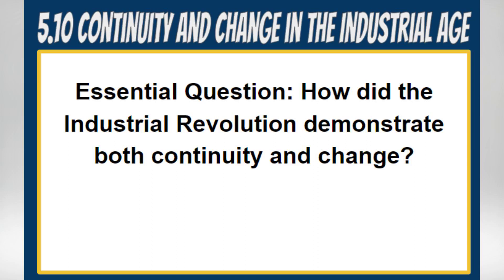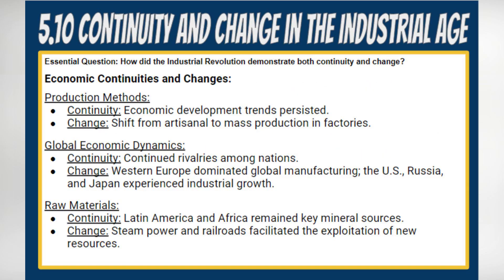AP World History Topic 5.10: Continuity and Change in the Industrial Age. Essential question: how did the Industrial Revolution demonstrate both continuity and change? The Industrial Revolution, spanning from 1750 to 1900, was a period of profound transformation that demonstrated both continuity and change across economic, social, cultural, political, and environmental dimensions.